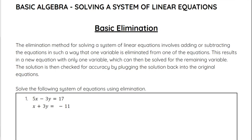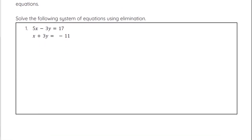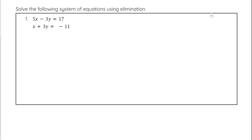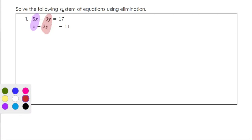So let's take a look at this example. We can solve the following equation by using elimination because this one is already set up for elimination for us. The reason I know that is because of a couple of pieces. First of all, I see that the x's are lined up, the y's are lined up, and the equal signs are lined up, and then we have our constants over here.